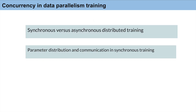Now I will discuss concurrency in data parallelism training. In data parallelism training there are two approaches: synchronous training and asynchronous training. We need to understand how parameter distribution and communication happen in each. In synchronous training, all workers synchronize before updating; in asynchronous training, workers update independently. We'll first look at synchronous versus asynchronous distributed training, then parameter distribution and communication in synchronous training.